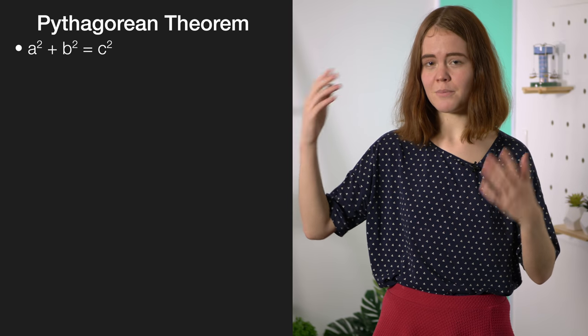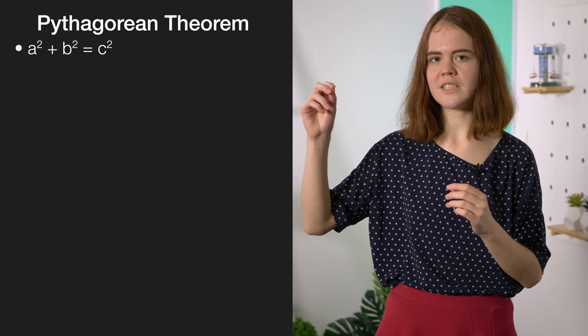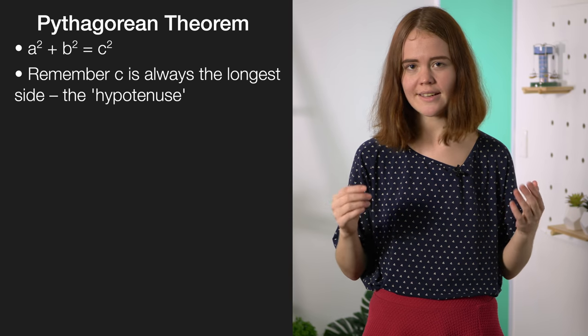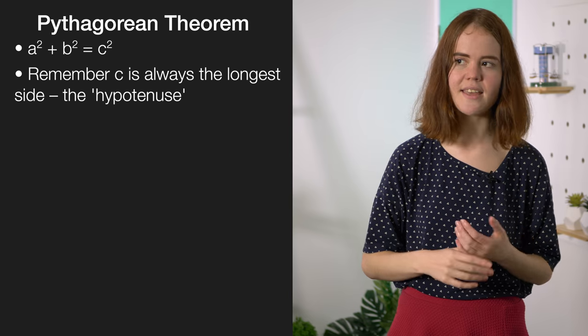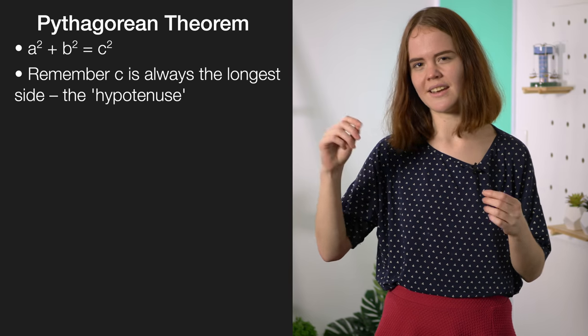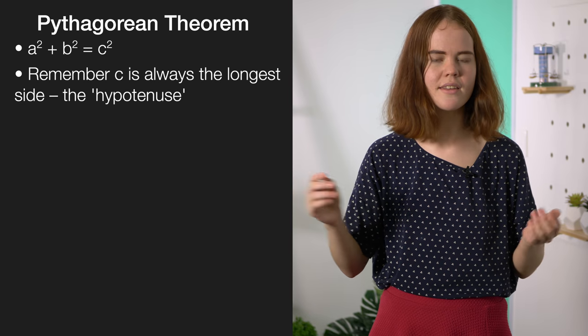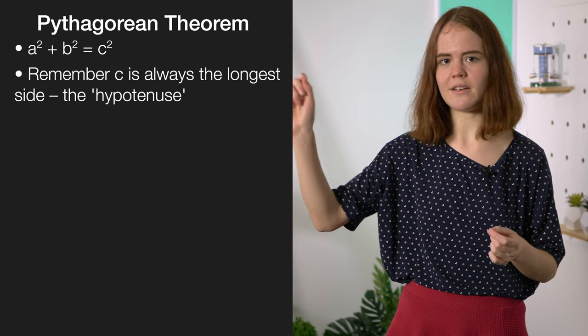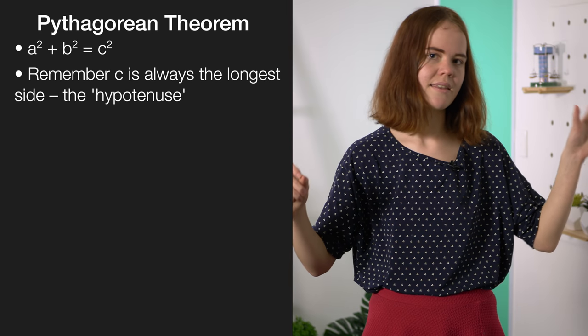Your absolute best friend in this paper is going to be Pythagoras' theorem. Any time you have a right angle triangle you should be thinking about whether you can apply this. Remember A squared plus B squared equals C squared, and when you apply this rule make really sure that you know which side is C. C is always the longest side — it's always the hypotenuse. A really common mistake is that students label the sides wrongly or don't bother labelling them, and they end up with a result for a particular side that's longer than the hypotenuse, which is totally impossible. So make sure C squared is always about your hypotenuse, and A squared and B squared are always about the other two sides.